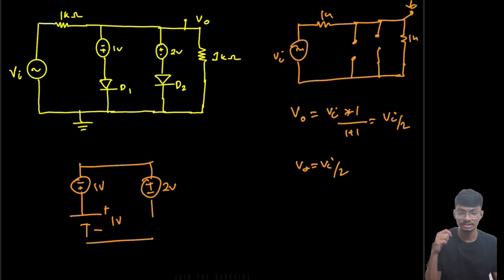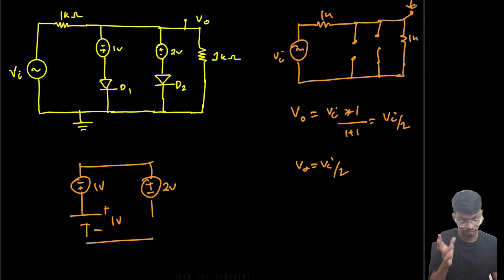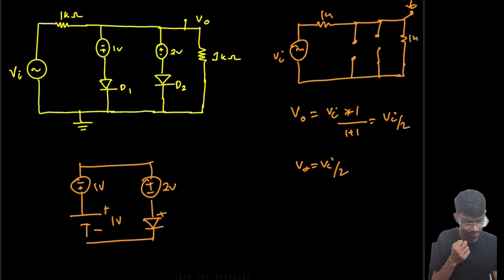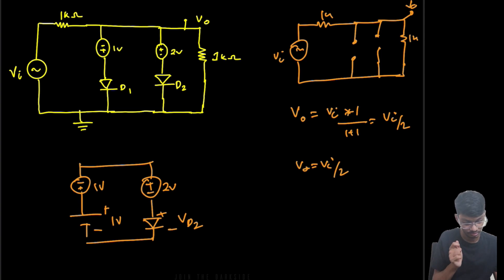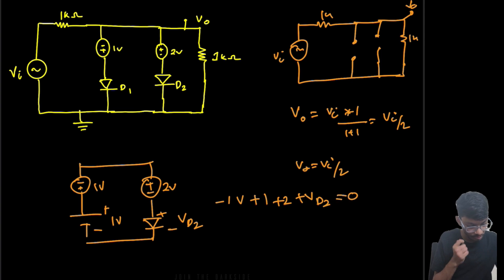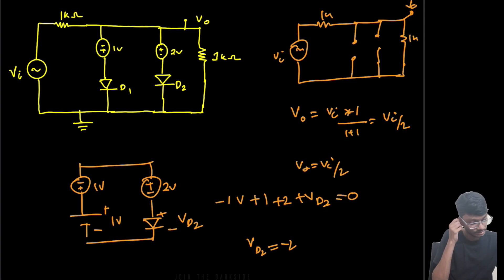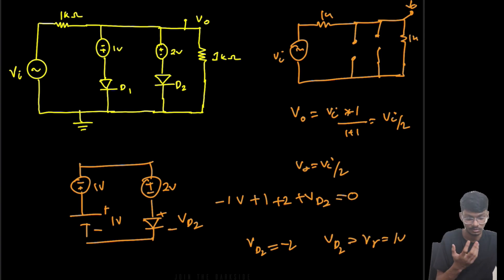Our initial thought was that D1 turns on first and D2 turns on later. So let's turn off D2 and measure the potential across it as VD2. Applying KVL: minus 1 plus 1 plus 2 plus VD2 = 0, giving VD2 = -2 volts. Since for D2 to turn on VD2 must be greater than Vγ = 1 volt, which never happens — when D1 is on, D2 will never turn on.